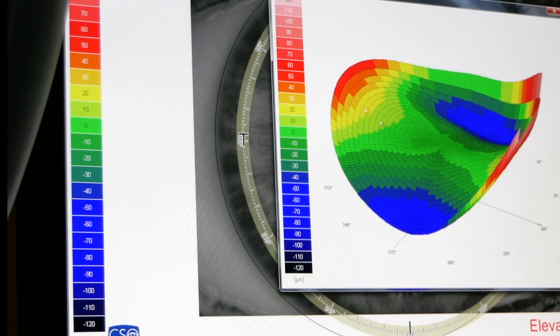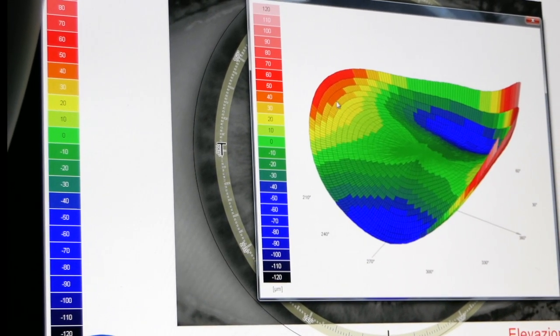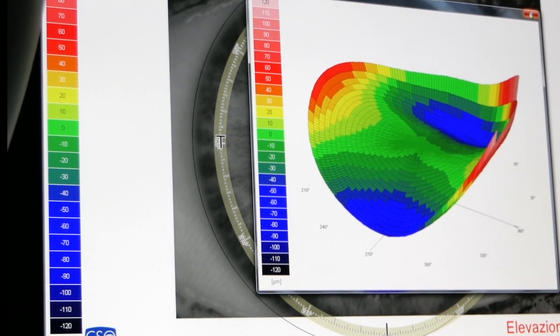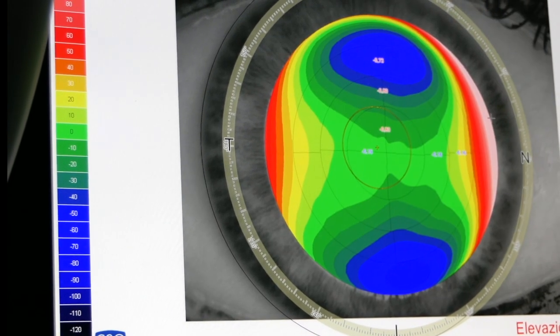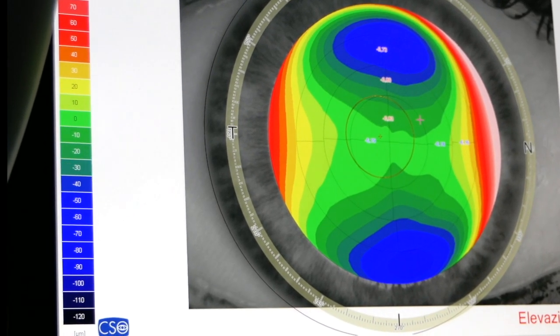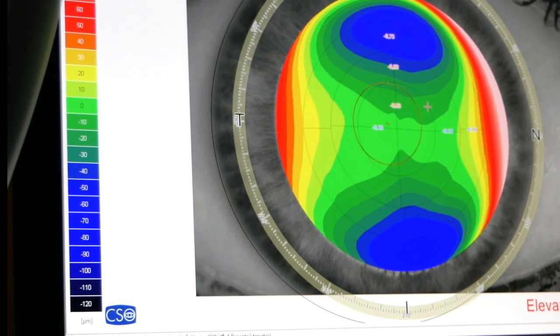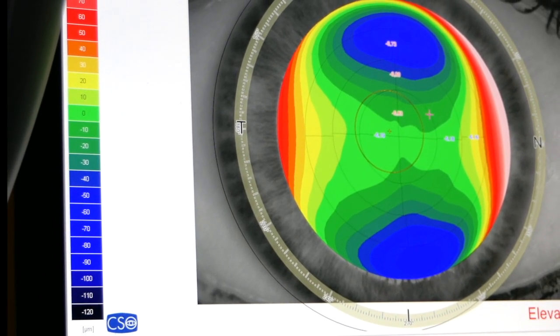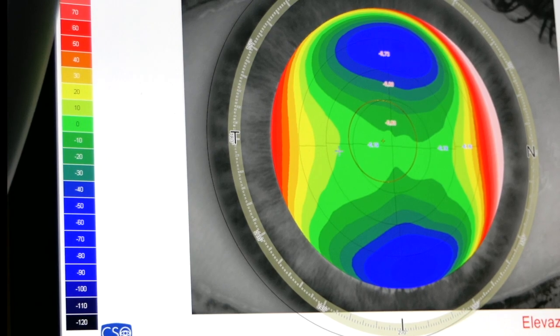The blue ones in which the cornea is further back than the ideal cornea, and the red ones in which the cornea is more advanced than the ideal one. This is artificial because in reality, it is not so. There is no ideal cornea.